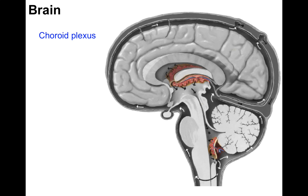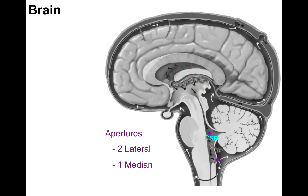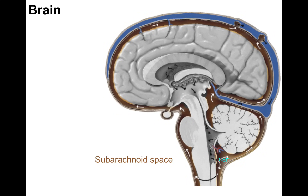Within the lateral, third, and fourth ventricles there is choroid plexus (red), which produces CSF. CSF flows from the lateral ventricles to the third ventricle, through the cerebral aqueduct, and accumulates in the fourth ventricle. Three openings — two lateral apertures and one median aperture — allow CSF into the subarachnoid space, where it flows superiorly and enters the arachnoid villi, filtering into the dural venous sinuses. CSF arises from the choroid plexus and ends in the dural venous sinus.